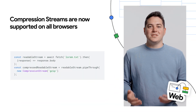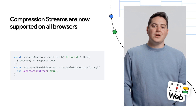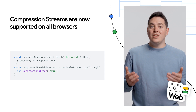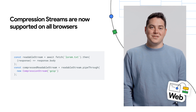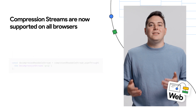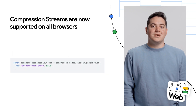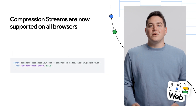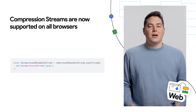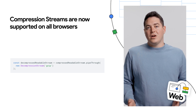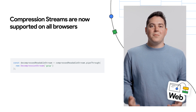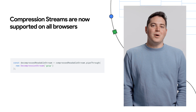First, we can head over to the web to talk about the new Compression Streams API, and it's available in all three browsers. This API makes it possible to compress and decompress using gzip or deflate formats and no longer requires you to include a compression library in your applications. You can learn more about the API on web.dev.